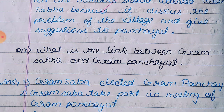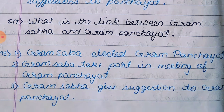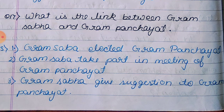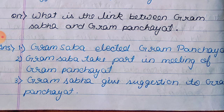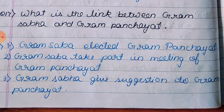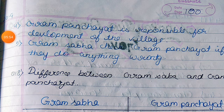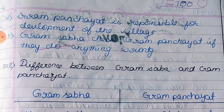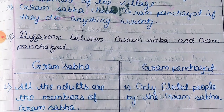Question 17: What is the link between Gram Sabha and Gram Panchayat? Answer: Gram Sabha elects the Gram Panchayat. Gram Sabha takes part in meetings of Gram Panchayat. Gram Sabha gives suggestions to Gram Panchayat. Gram Panchayat is responsible for the development of the village. Gram Sabha checks Gram Panchayat if they do anything wrong.